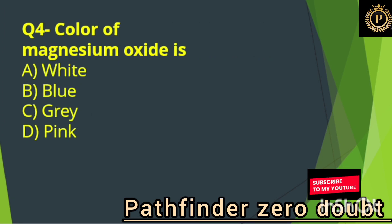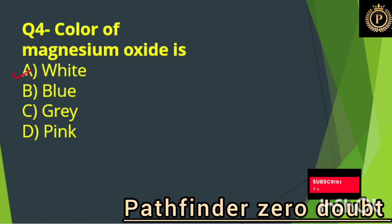The color of magnesium oxide is: Option A, white.